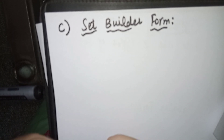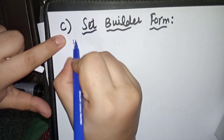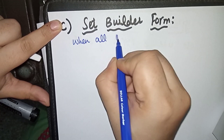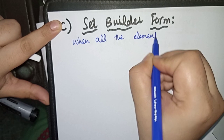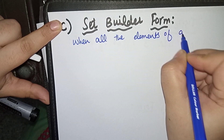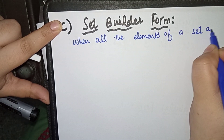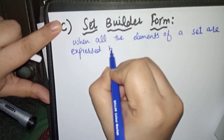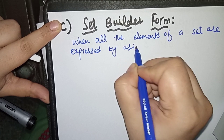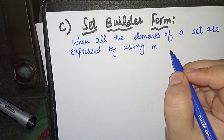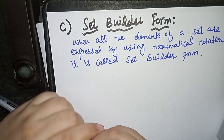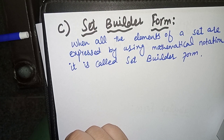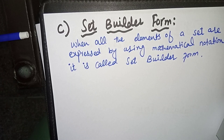The third form is set builder form. It is also interesting but a little bit more difficult than the other two types. The definition of set builder form is: when all the elements of a set are expressed using mathematical notations, it is called a set builder form. I will explain what mathematical notations are through examples.